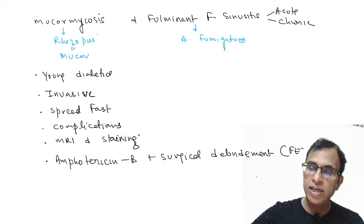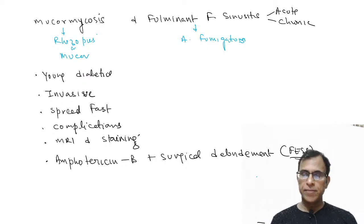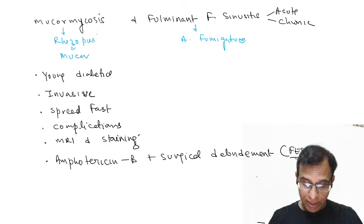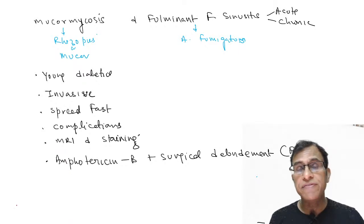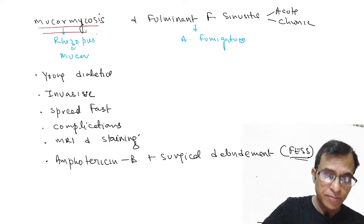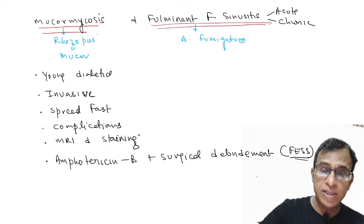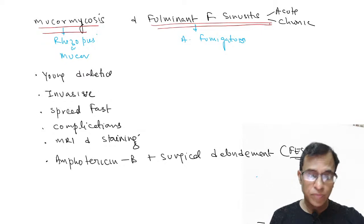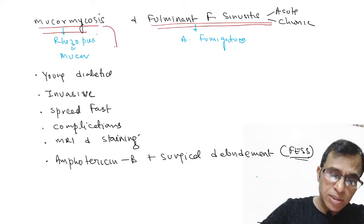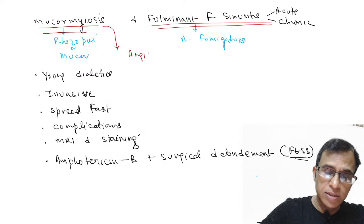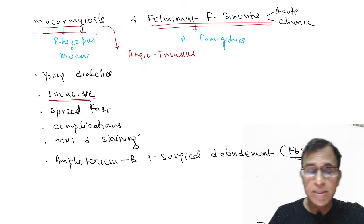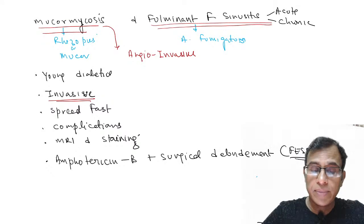The surgery of choice is functional endoscopic sinus surgery (FESS), which should be done in both conditions. The two basic differences between mucormycosis and fulminant fungal rhinosinusitis are: first, the fungus is different (hence different names); and second, mucormycosis is an angio-invasive fungus — meaning it invades the blood vessels themselves.